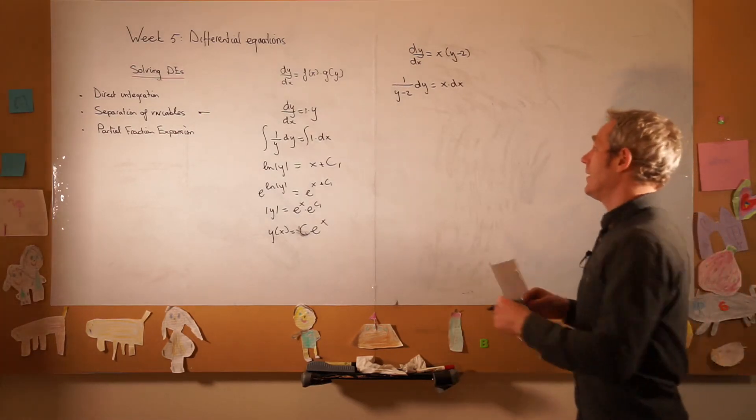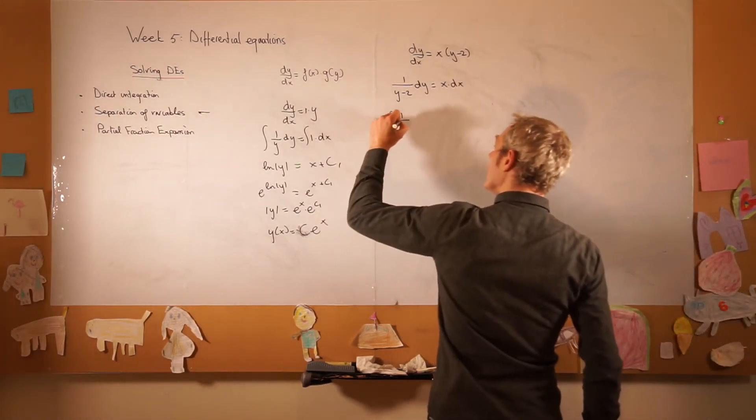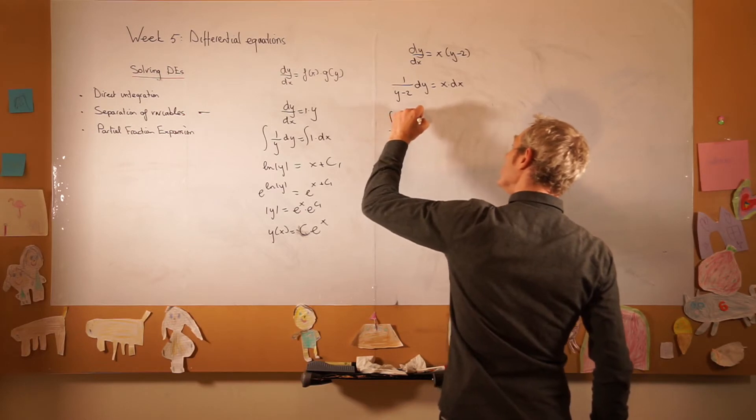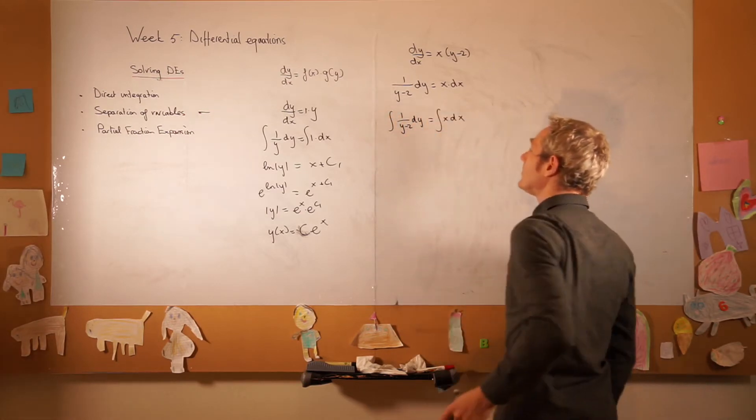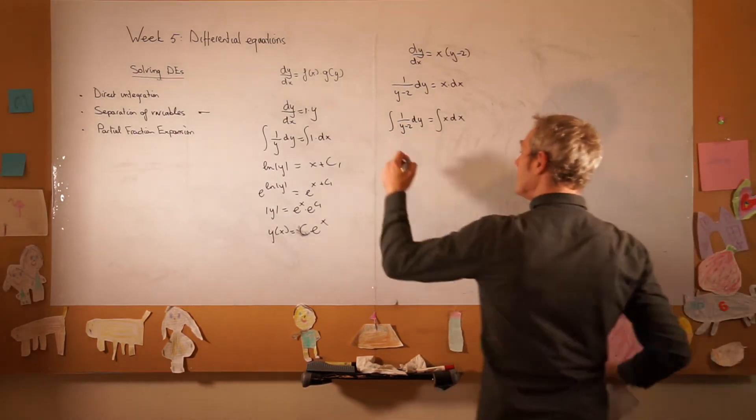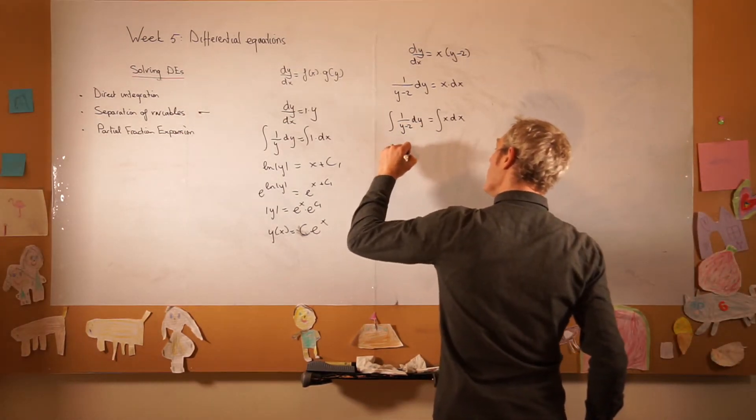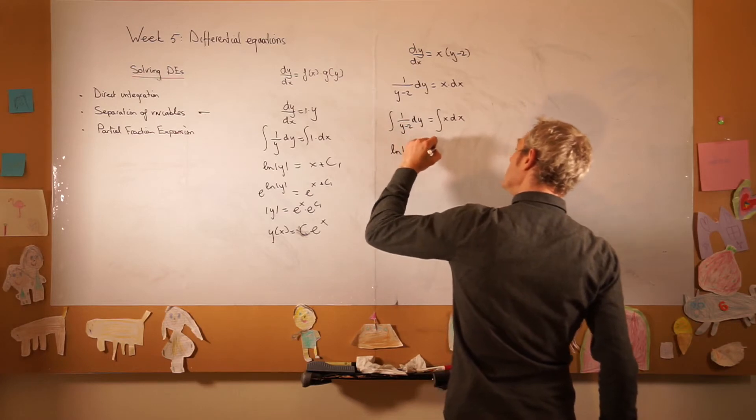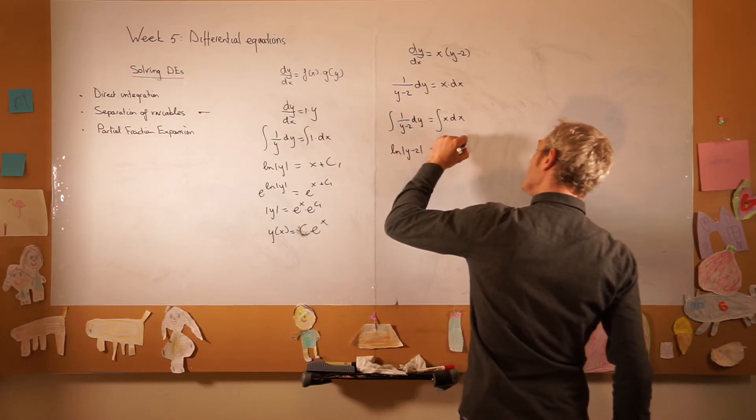Now we integrate left and right, so 1 over (y minus 2) dy is equal to x dx. We integrate left and right, so ln(y minus 2) is equal to half x squared plus c.